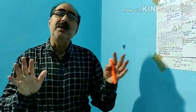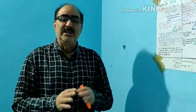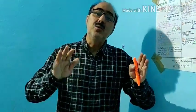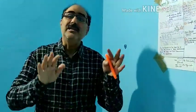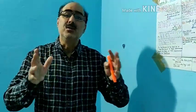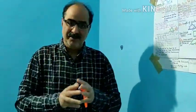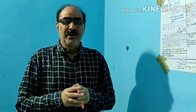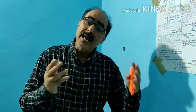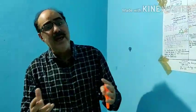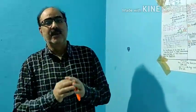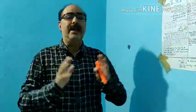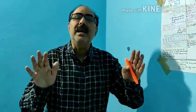Congruent triangles means same shape, same size. इसके लिए आपने कुछ criteria, कुछ conditions, कुछ rules पढ़े हैं — congruency conditions, criteria, rules, axioms. जिनमें आपने पढ़ा है: SSS axiom, SAS axiom, ASA axiom, RHS axiom. These are congruency rules — यह पढ़े हैं आपने ninth class में।